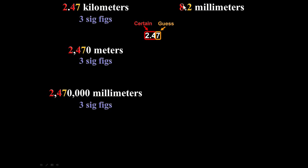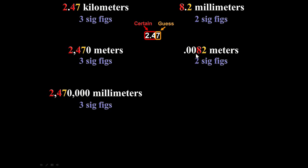If we have 8.2 millimeters — the 8 known with certainty, the 2 a guess, two sig figs — and convert to meters by dividing by 1,000, we get 0.0082 meters. We still knew the 8 for certain and the 2 was a guess. There are still just two sig figs. The leading zeros showed up only because we converted to a different size unit, so those zeros are not significant.